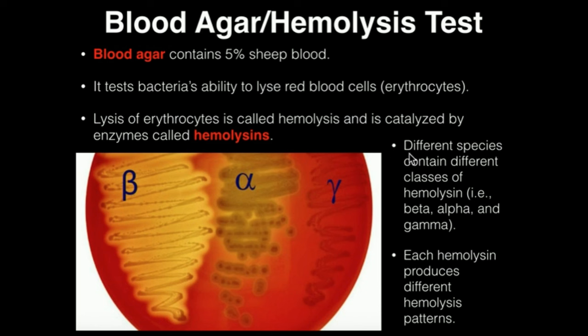Different species contain different classes of hemolysin. Some contain a beta hemolysin, others contain an alpha hemolysin. Gamma is a little bit misleading — it basically means they don't express hemolysin at all, in which case there's going to be no hemolysis. For bacteria that express beta and alpha hemolysins, they're going to destroy red blood cells, but the patterns you're going to see on the blood agar are going to look a little bit different. We're going to look at those patterns on the next slide.